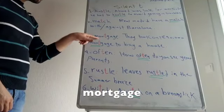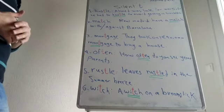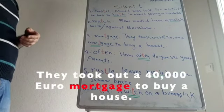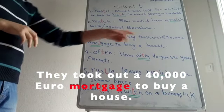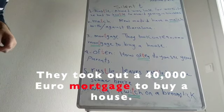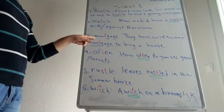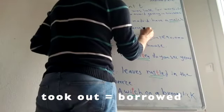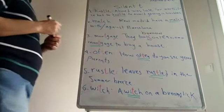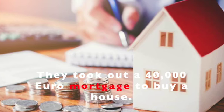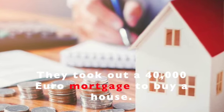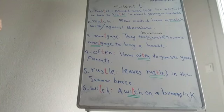Number three: mortgage. Mortgage. Do you know what's the meaning of mortgage? Mortgage. They took out a 40,000 euro mortgage to buy a house. Mortgage. Mortgage means borrower — you take out a loan. Mortgage.